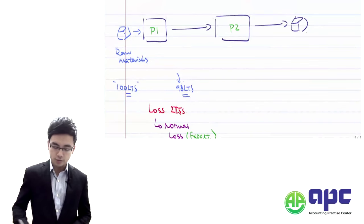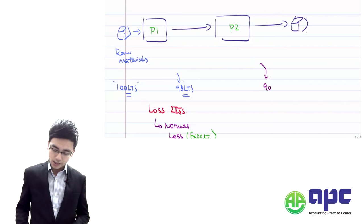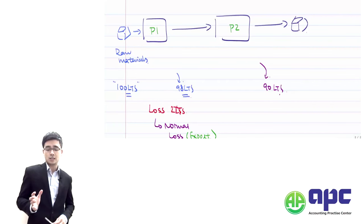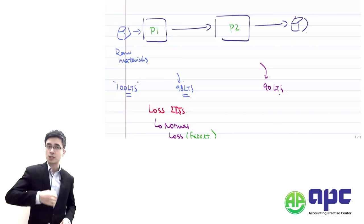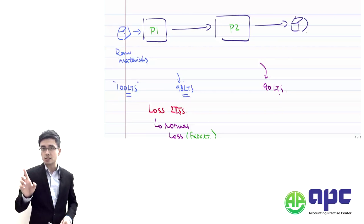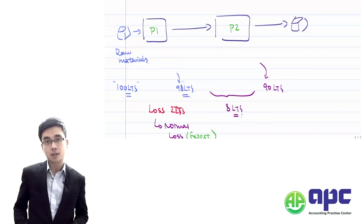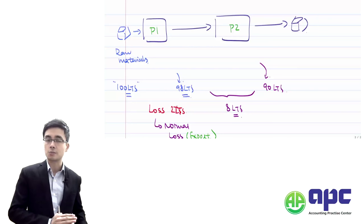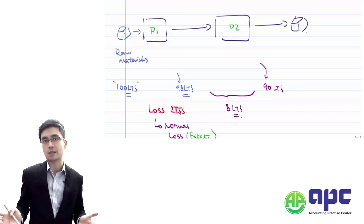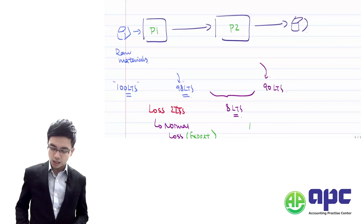The oil from process one goes into process two, and at the end you get 90 litres out. From process one's perspective, you expect two litres of normal losses. In process two, you also expect two litres of losses, but actually there are eight litres of losses instead of two — more than expected. So you expect to lose two litres but actually lose eight. How do we account for those abnormal losses in a process account?